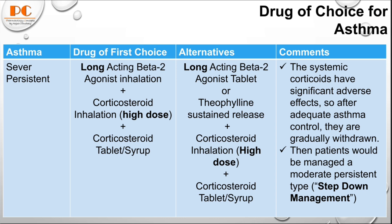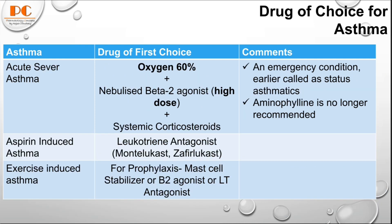For acute severe asthma — earlier called status asthmaticus — this is an emergency condition. Treatment includes oxygen at 60%, nebulized beta-2 agonist at a high dose, and systemic corticosteroid. Aminophylline is no longer recommended and should not be used in this condition.